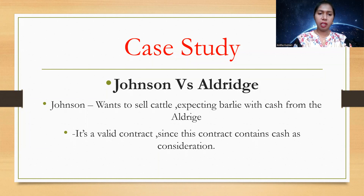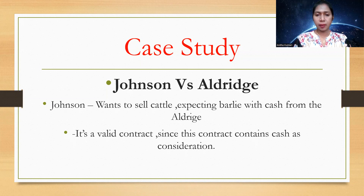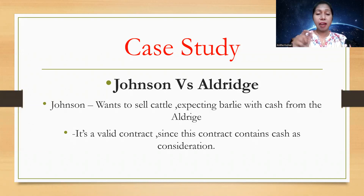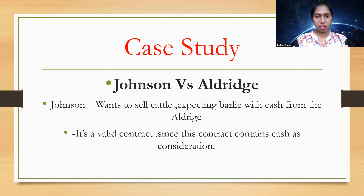Here is one case study: Johnson versus Aldridge. Johnson wants to sell cattle and he is exchanging barley along with cash from Aldridge. Under the essential elements of contract, under the Sale of Goods Act, we export cash. But in this case, he is exchanging cash along with barley as a benefit received from Aldridge. Is this a valid contract? It is a valid contract, because even though he exchanges barley, cash is also entering into the contract. So it is valid.